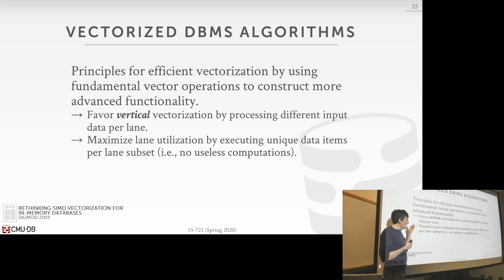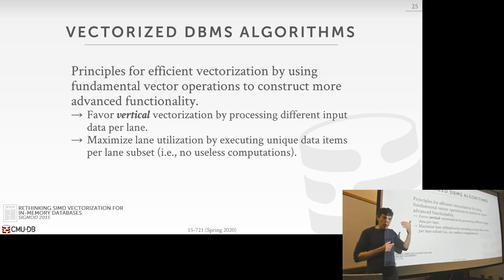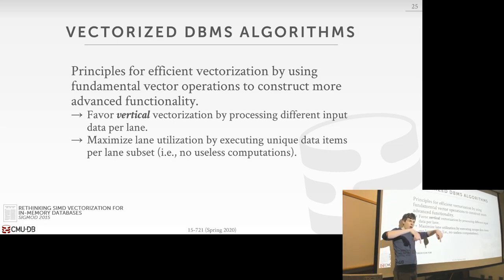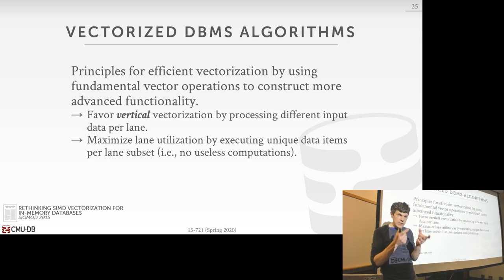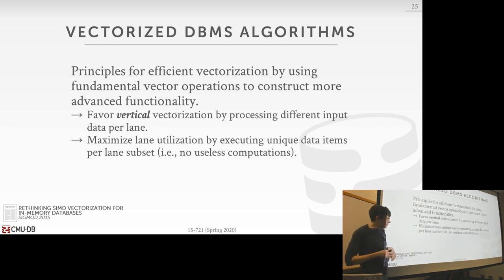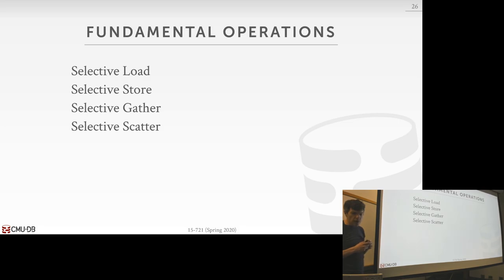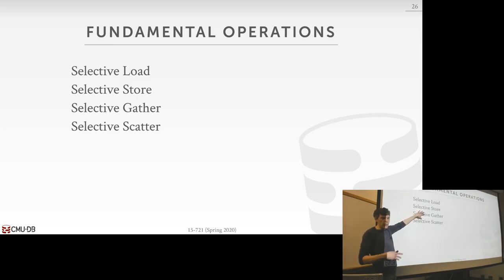The other big design decision is to maximize lane utilization — every time you invoke an instruction, you should be doing useful work for all data items in your vector. You don't want to have a four-element vector where only one or two contain useful data and the rest are garbage. The goal is to pack unique, useful data into every lane of every register for every instruction.